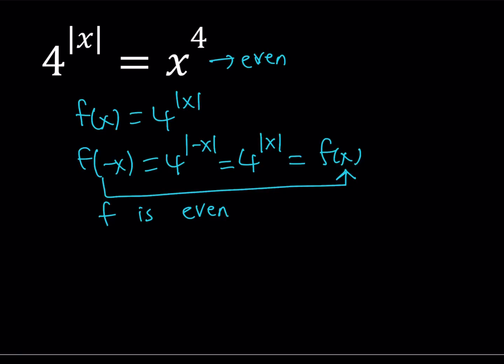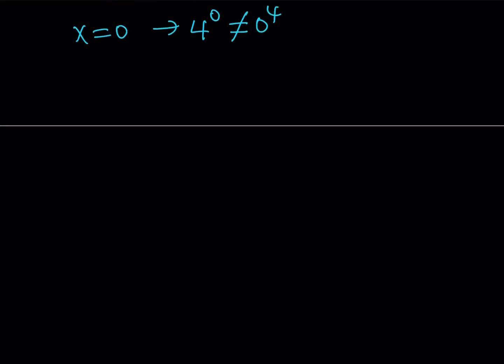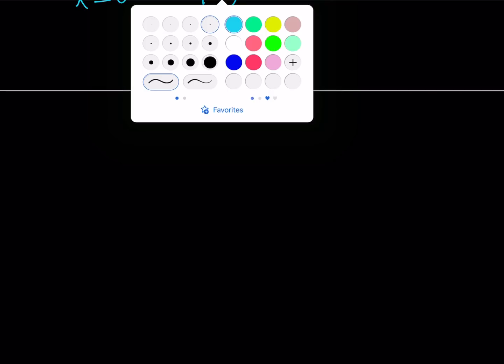Obviously x to the 4th power is also an even function because it's an even power of x. So both functions are even, which means we don't really have to worry about finding all the positive and negative values — we can find the positive values and reflect them. Let's check x equals 0: 4 to the power 0 and 0 to the power 4 are not equal, so x equals 0 is not a solution.